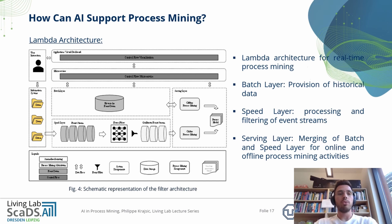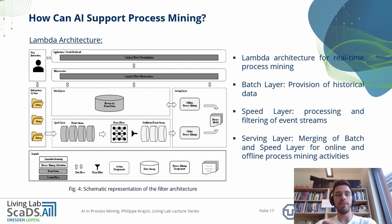To meet the above-named challenges, we first designed a Lambda architecture for the purpose of real-time process mining with an embedded anomaly filter. The Lambda architecture itself consists of three different layers: the batch layer to process historical data, the speed layer to process and filter event streams in real-time, and a serving layer for merging of batch and speed layers for online and offline process mining activities.